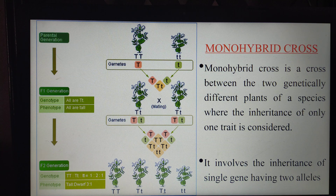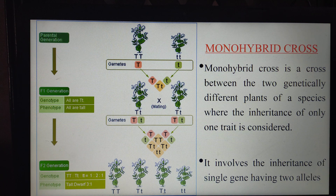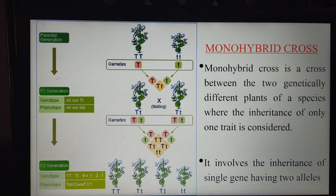For example, if you eat a normal dosa, there is nothing special. But if some potato stuffing is kept in between the dosa, now the product we get is masala dosa. Masala dosa is a hybrid which is formed by the combination of normal dosa stuffed with potato. So this can be considered as an example for a hybrid.